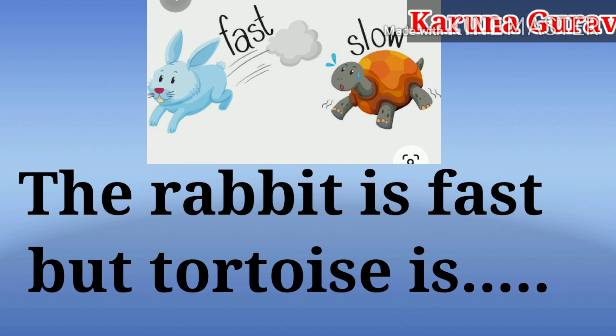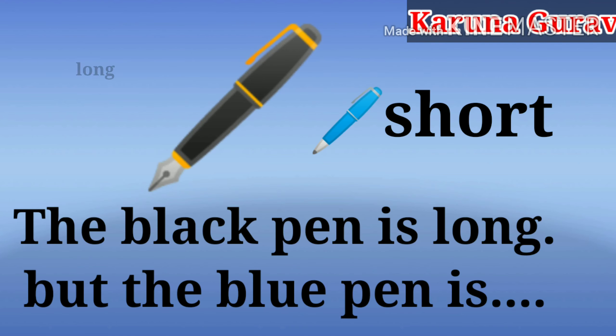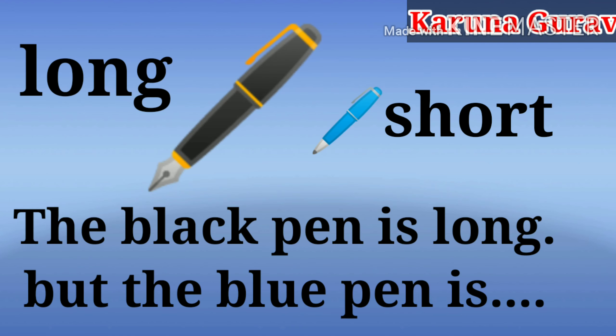Fast, Slow. The rabbit is fast, but tortoise is slow. Long, Short. The black pen is long, but the blue pen is short.